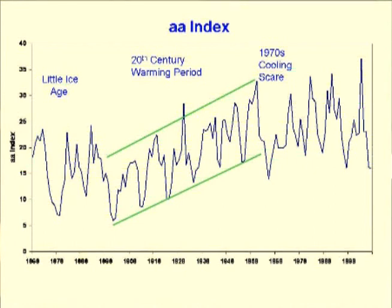The 1970s cooling scare corresponds to a break in the uptrend of the AA Index. Post that, the record is flat, corresponding to the satellite temperature record. What is of interest is what is happening right now: 2006 and 2007 are two years of low values, as opposed to the normal one year of minimum over the past three cycles.